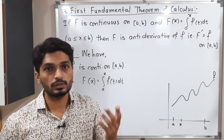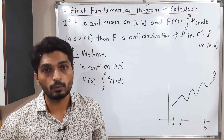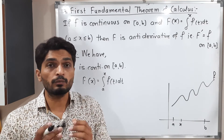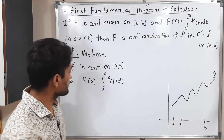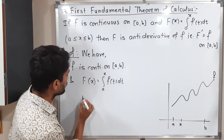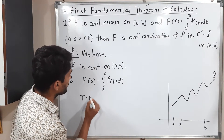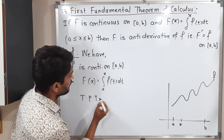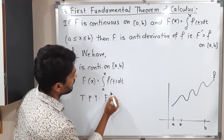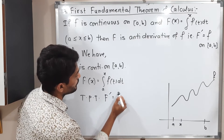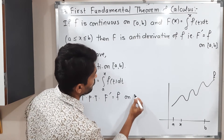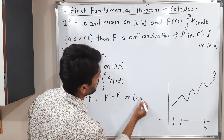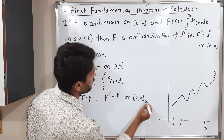We know that derivative and integration are exactly opposite to each other. So what we have to prove is: capital F′(x) = small f(x) on the closed interval [a, b].